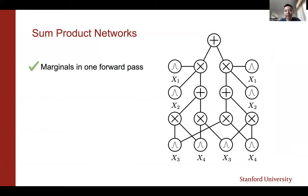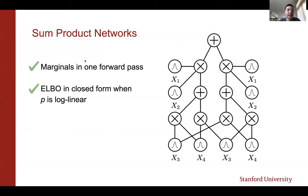When sum-product networks were first introduced, the cool thing was you can compute marginals in one forward pass. But as we'll see later, you can also compute marginals using more expressive models, so that's not the only advantage. The key thing here is that SPNs can compute these ELBOs in closed form when p is log-linear — exactly the graphical model setting where you want to compute partition functions.